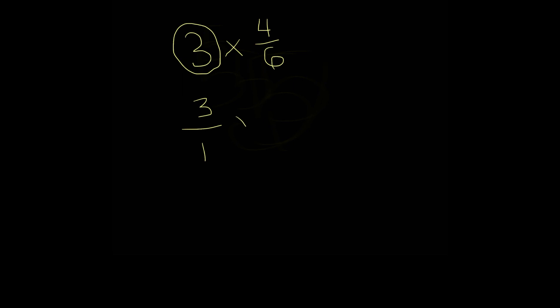So now we do 3 over 1 times 4 over 6. And this equals, remember, when we're multiplying fractions, we multiply both the denominators with each other and the numerators with each other. So 3 times 4, that's 12, that's our numerator, over 1 times 6, that's 6.